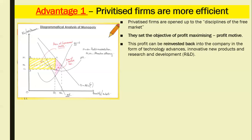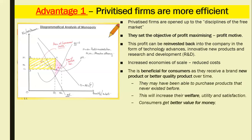The new Elizabeth line, which just opened, would be an example of money collected from privatised firms being reinvested back into quality. We can also consider not just dynamic efficiency, but productive efficiency — increased economies of scale lead to reduced costs. Privatised firms will be incentivised to cut costs, because by cutting costs, assuming revenue remains constant, that gap — those supernormal profits — will be larger. This is beneficial for consumers as they receive a better quality product over a period of time.